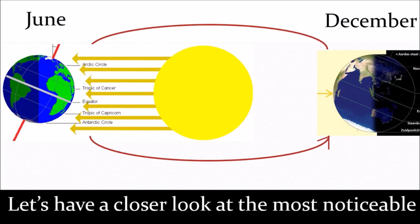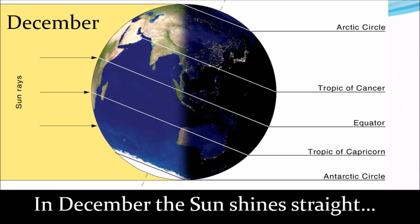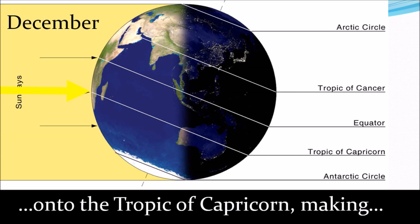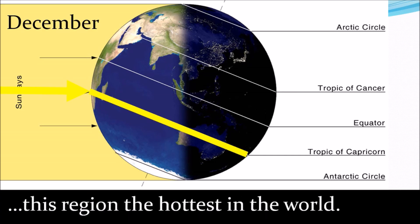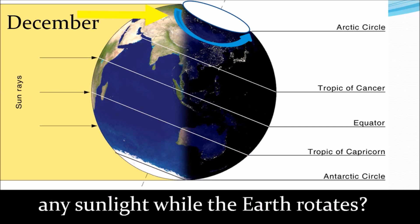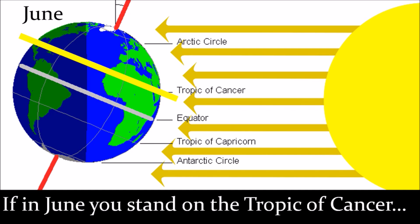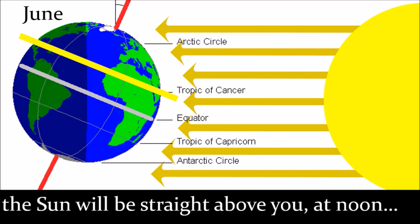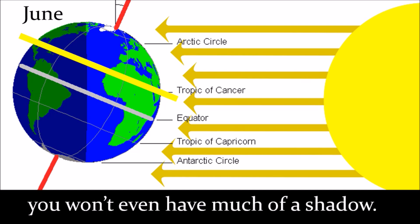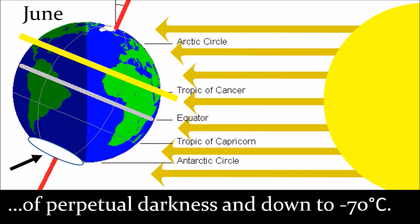Let's have a closer look at the most noticeable difference: June versus December. In December, the Sun shines straight onto the Tropic of Capricorn, making this region the hottest in the world. The North Pole isn't getting any sunlight while the Earth rotates. In June, things are the other way round — if you stand on the Tropic of Cancer, the Sun will be straight above you, and at noon you won't even have much of a shadow. It's now winter in Antarctica, with months of perpetual darkness and temperatures down to minus 70 degrees.